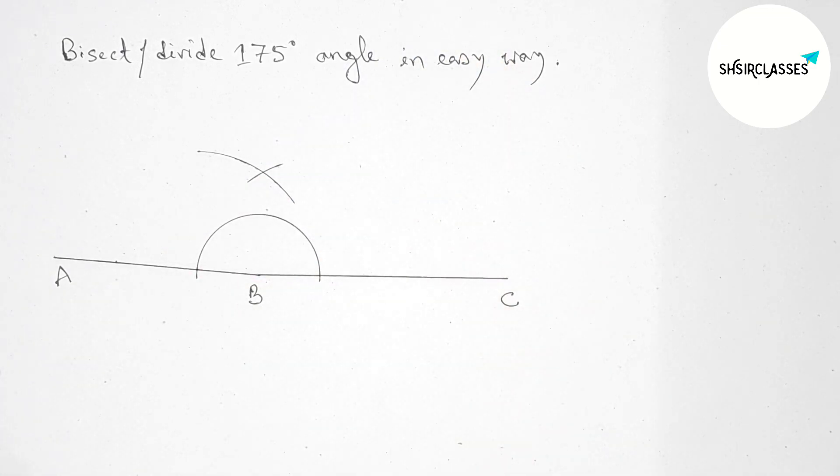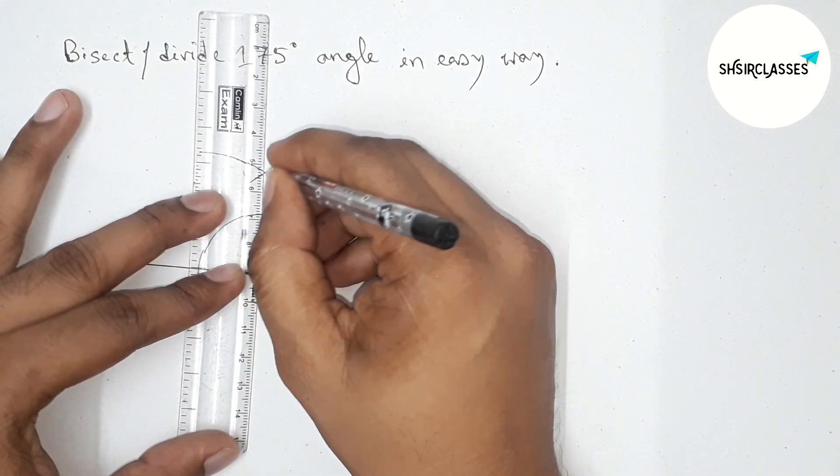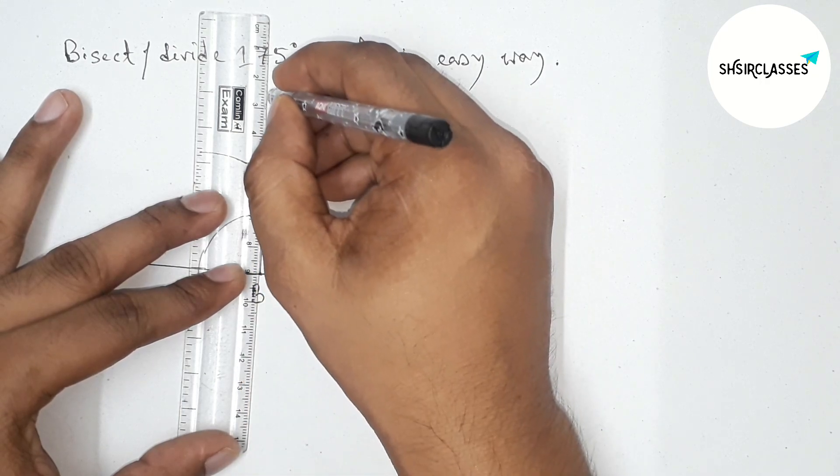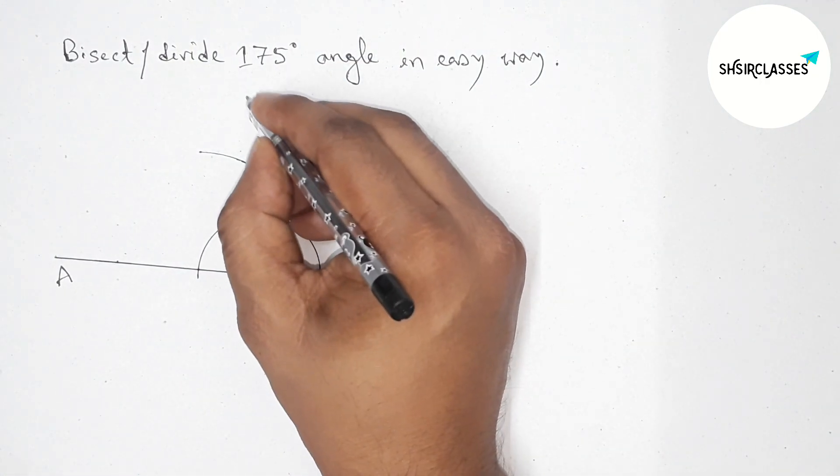Okay, so now joining this line which bisects the angle ABC perfectly. So now taking point D.